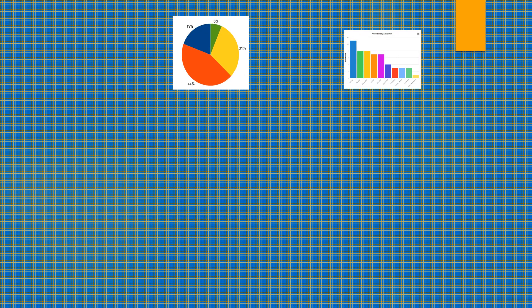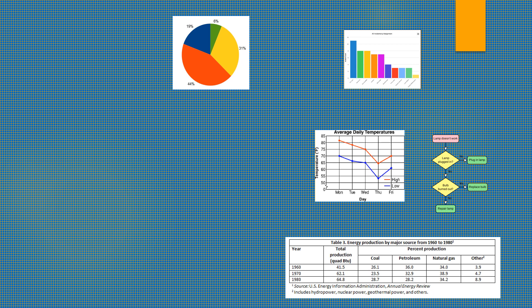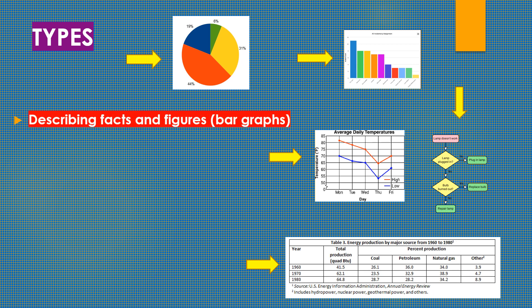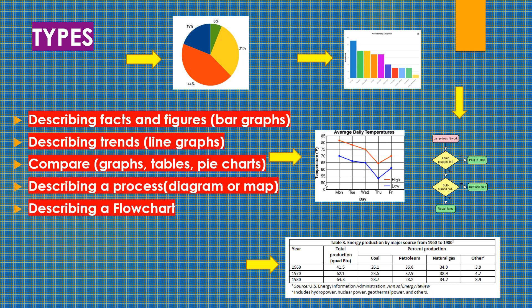Now let's take a look at the types of graphs. We can get any graph like a pie chart, bar graph, line graph, flow chart, or table. If you want to describe facts and figures, you need bar graphs. Describing trends uses line graphs, comparison through tables and pie charts, describing a process diagram or a map, and describing a flow chart.